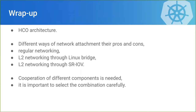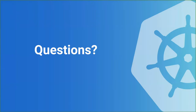To wrap up: David talked about the HCO architecture and why it's important to get all components working together correctly. There are many components communicating through APIs and complementing one another. All the networking components I talked about are also useful for plain pods — we use them in combination with virtual machines. If you pick the configuration carefully, you can get really fast performance. I covered three ways to connect your VM to the network: the regular default CNI, L2 networking through a Linux bridge, and finally SR-IOV all the way to DPDK.